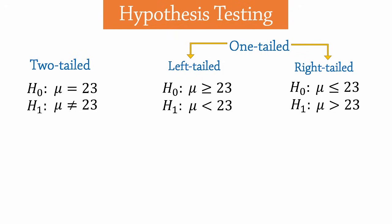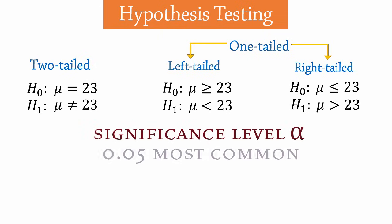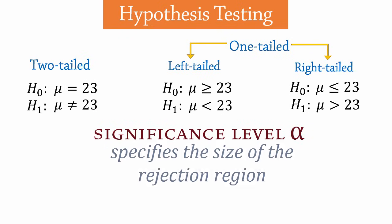Now, to determine when to reject the null hypothesis, we select a significance level alpha. 5% or 0.05 is the most commonly used alpha value. 0.10 and 0.01 are also often used. The significance level helps specify the size of the region where the null hypothesis should be rejected. We call that region the critical or rejection region.